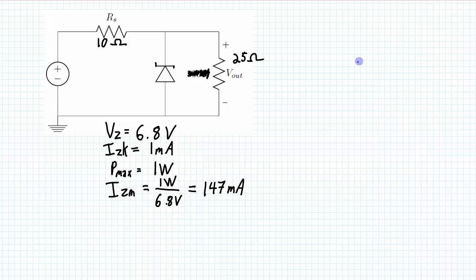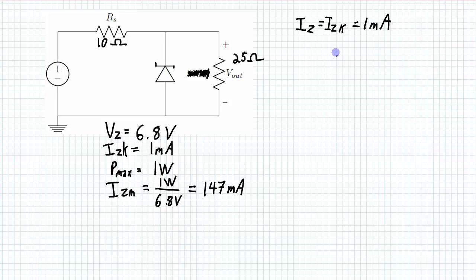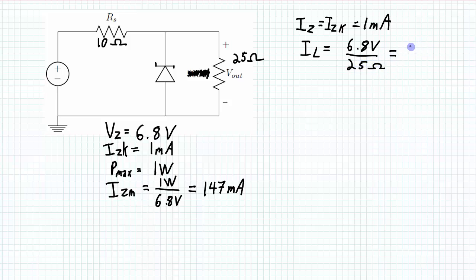So let's look at the minimum case: what voltage will we have from the source when the Zener current is equal to the knee current of 1 milliamp? The source current comes through this resistor, through this branch, and then some of it goes through the Zener diode and some through the load. In this case, the amount through the Zener diode is 1 milliamp. The amount to the load is going to be constant as long as the Zener diode is regulating — that current is 6.8 volts divided by 25 ohms of our load, which gives 272 milliamps for the current to the load.